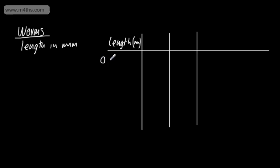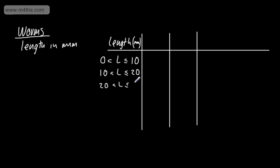The groups will be: 0 ≤ L < 10, 10 ≤ L < 20, 20 ≤ L < 30, 30 ≤ L < 35, and 35 ≤ L < 40. So what we've got is grouped data.